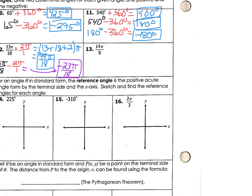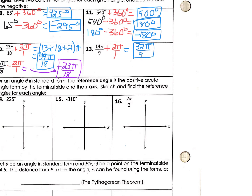I want you to practice that with number 13. Pause the video, add 2π to get one full revolution, and subtract 2π — or more if you need to — to get the other. In your calculator, you should have done 14 divided by 9, enter, and then plus 2, enter. You should end up with the positive fraction 32π/9. Then for your negative coterminal angle, 14π/9 minus 2π. You only need one negative revolution, and you do get a negative coterminal angle of negative 4π/9.